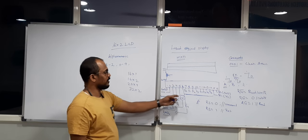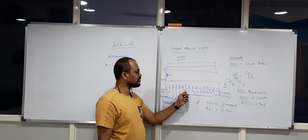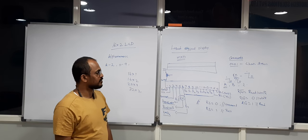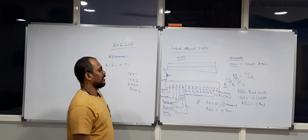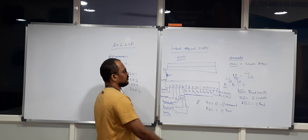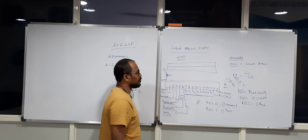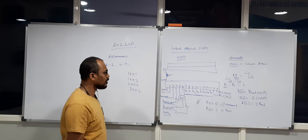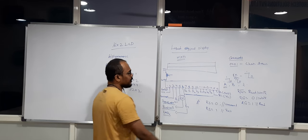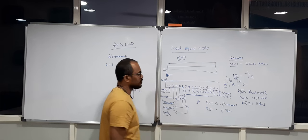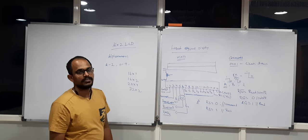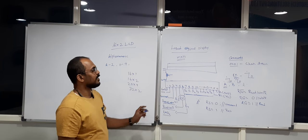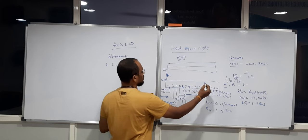The eight data lines D0 to D7 are used to pass commands or text, with physical pins 7 to 14. Pins 15 and 16 are backlight VCC and ground — provide positive supply on pin 15 and ground on pin 16. The LCD operating voltage is 5V DC, which is the same operating voltage as the microcontroller.